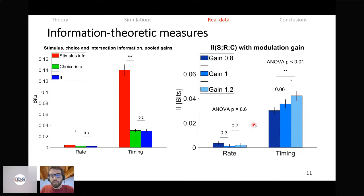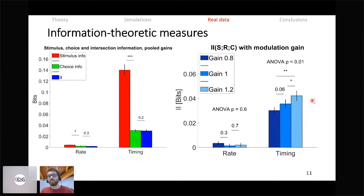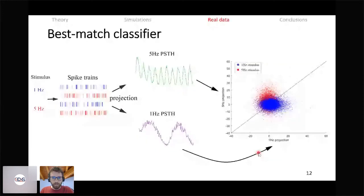Looking at intersection information at separate gains, a nice pattern emerges: the timing code shows the same pattern as the animal's behavioral performance. As stimulus gain increases, the spike timing precision of neurons increases — they become more temporally locked to the frequency that elicited them — and in this way the animal performs better and better. We do not see this pattern for the rate code, which is a strong suggestion that the timing code is what the animal uses to solve the task.